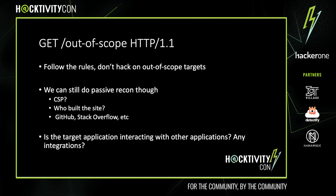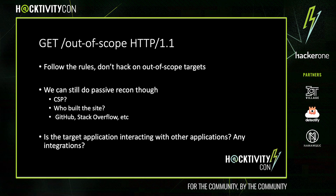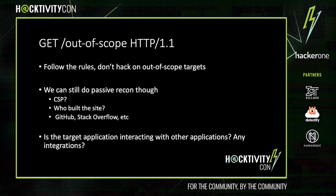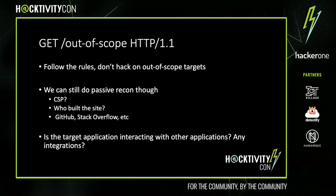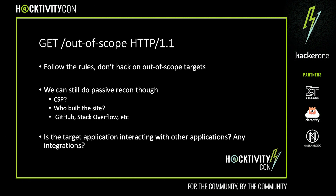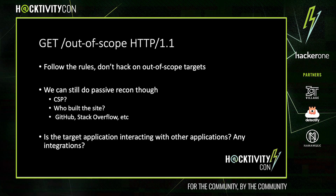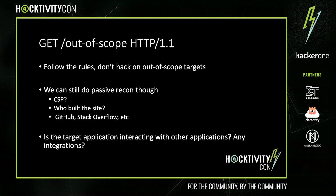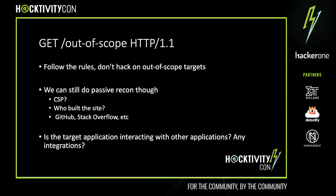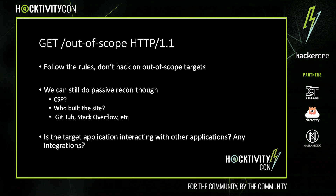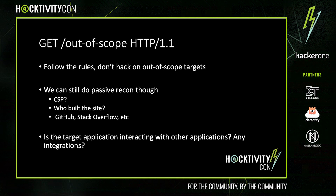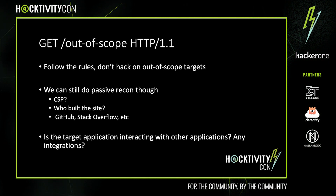One more thing to look at is whether the app integrates with other apps like Slack, GitHub, Jira, Microsoft Teams, and so on. Sometimes applications trust data coming in from those integrations, so it can result in interesting bugs. The first bug I'm going to talk about is an RCE which I got from doing recon on a third-party vendor. The second bug is about using third-party applications like Slack and Teams, which resulted in privilege escalations and information disclosures.